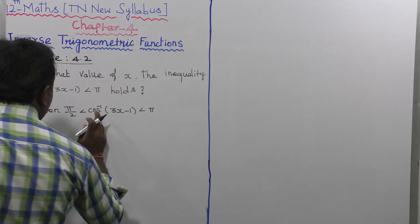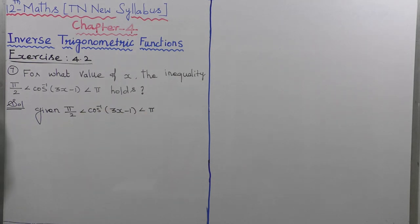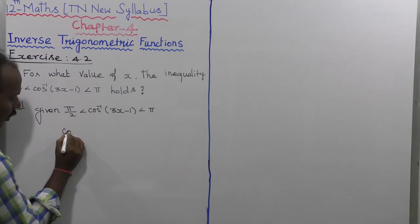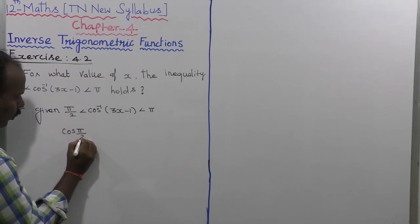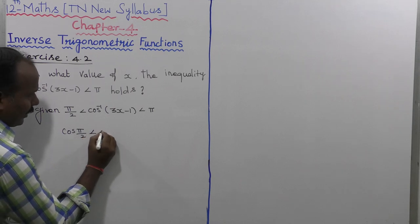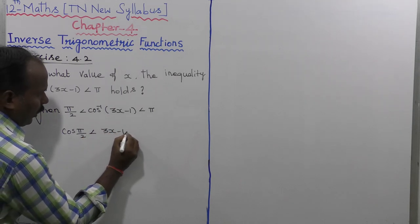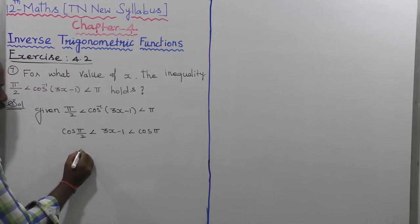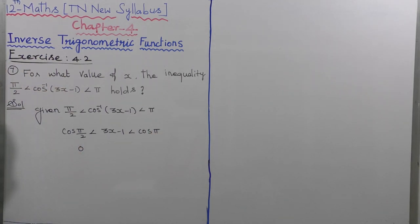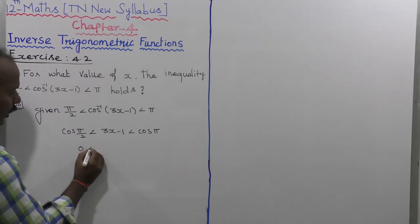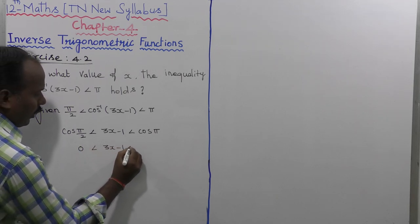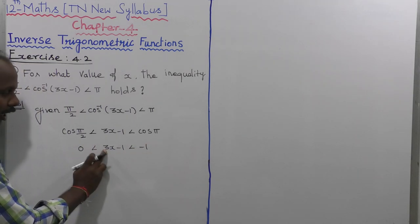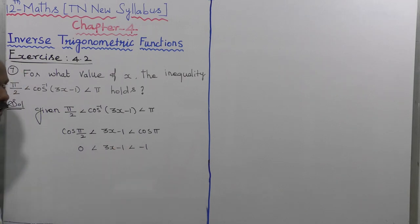So, applying cos to both sides of the inequality — cos inverse of x is moved to the right side and then to the left side. So cos(π/2) is less than 3x minus 1, which is less than cos(π). Cos(π/2) equals 0, and it is less than 3x minus 1, which is less than minus 1.